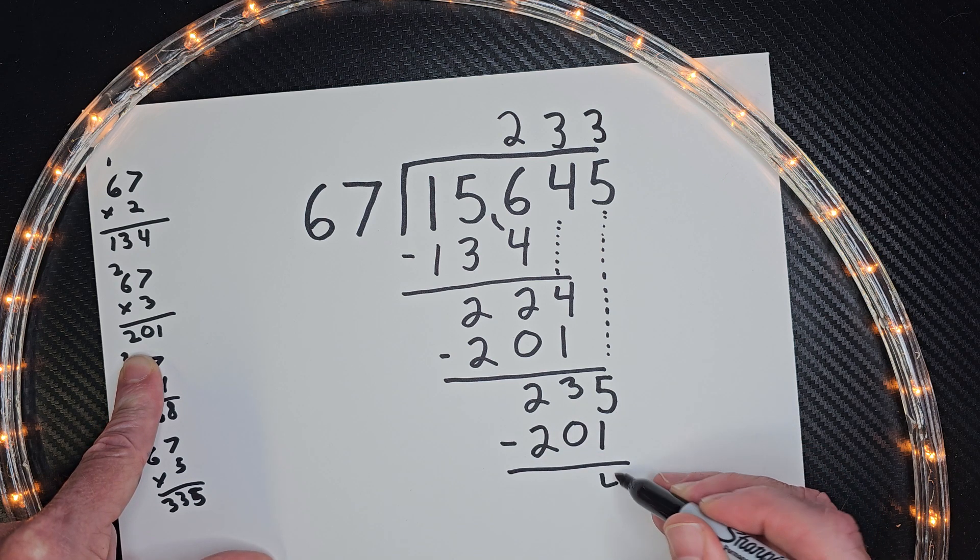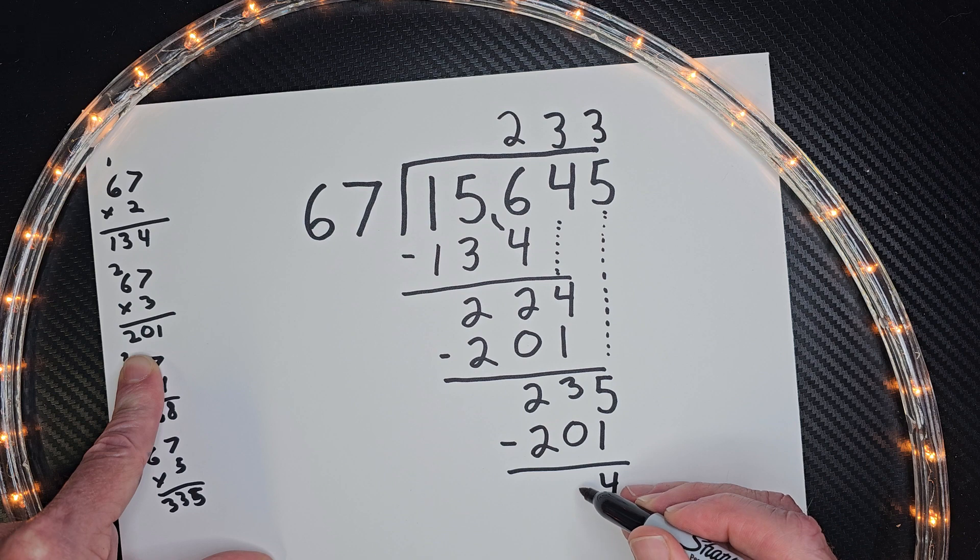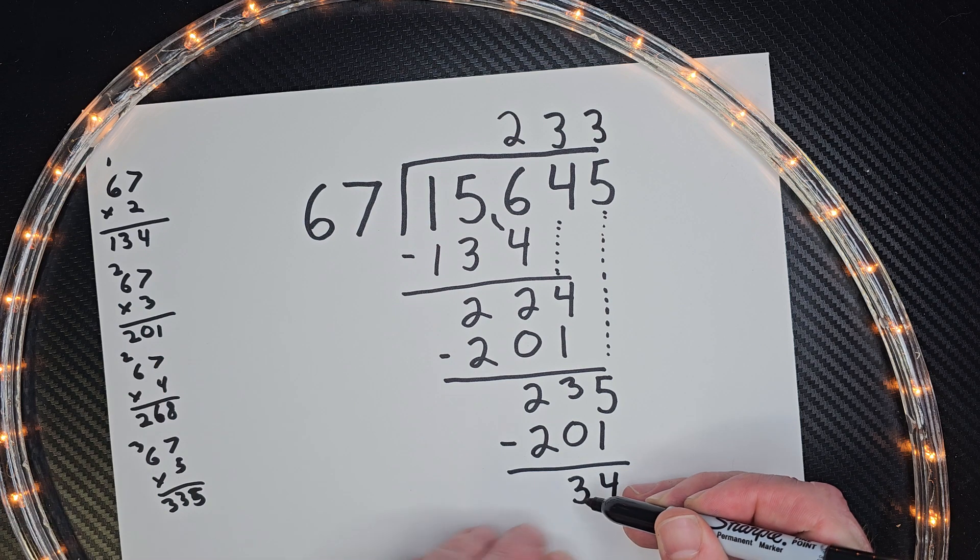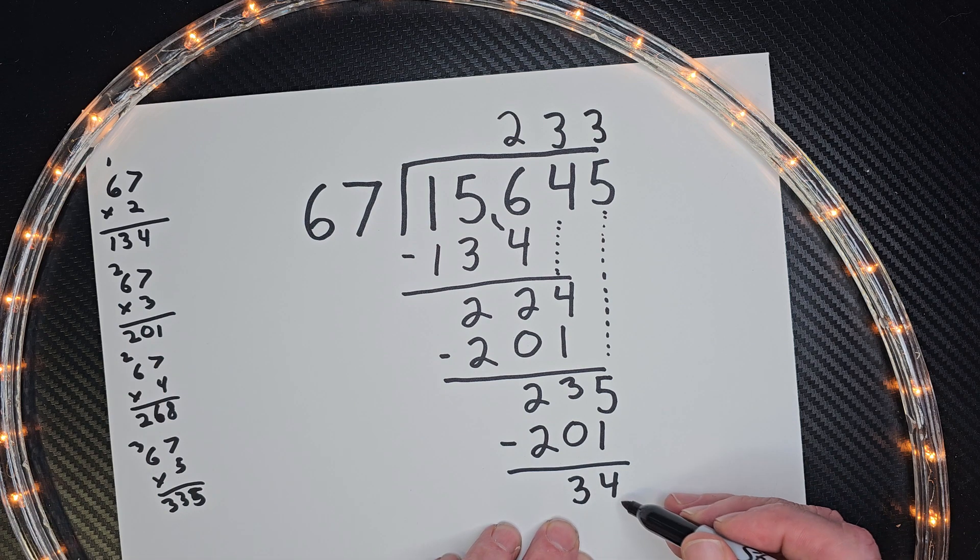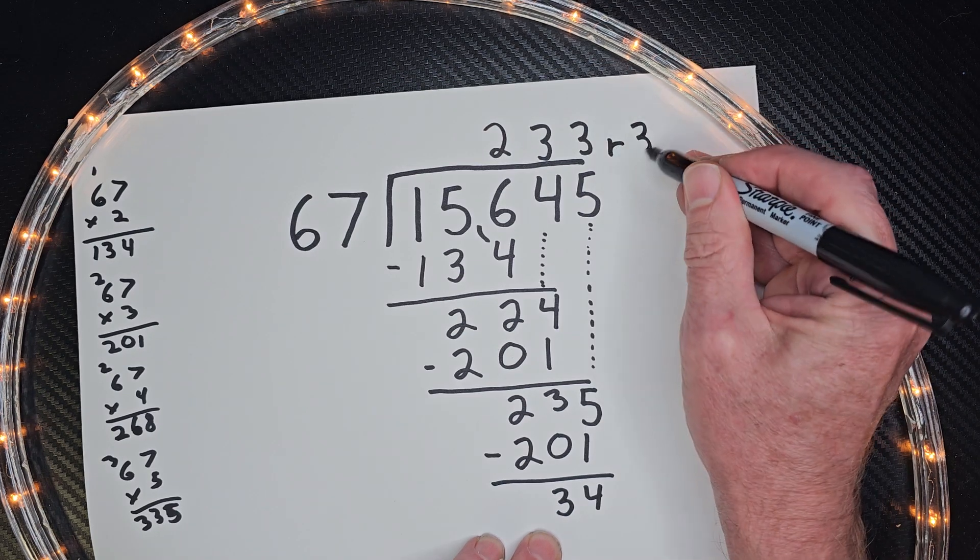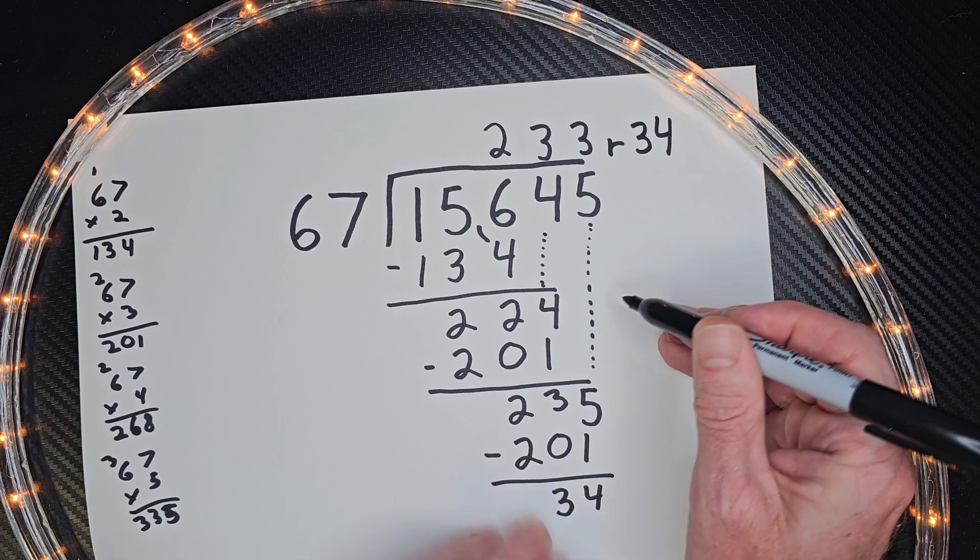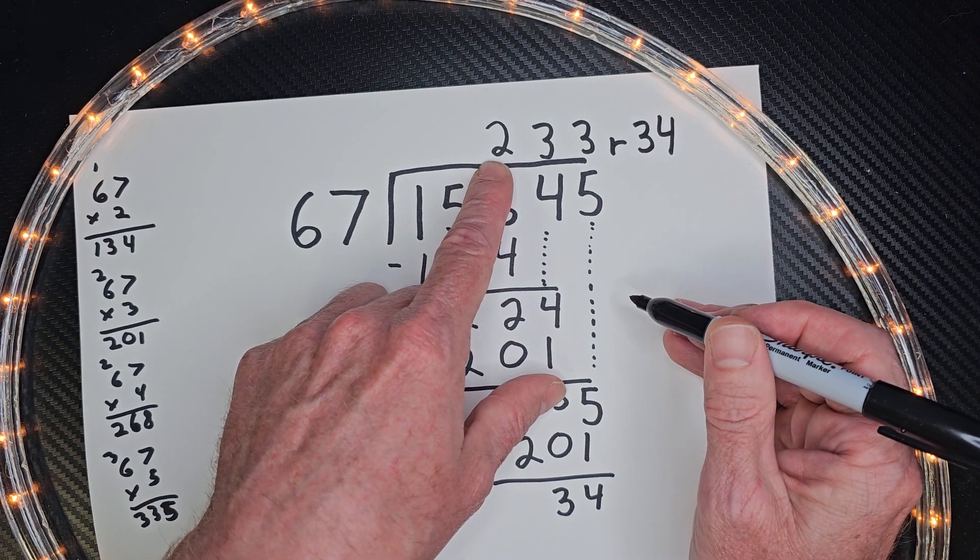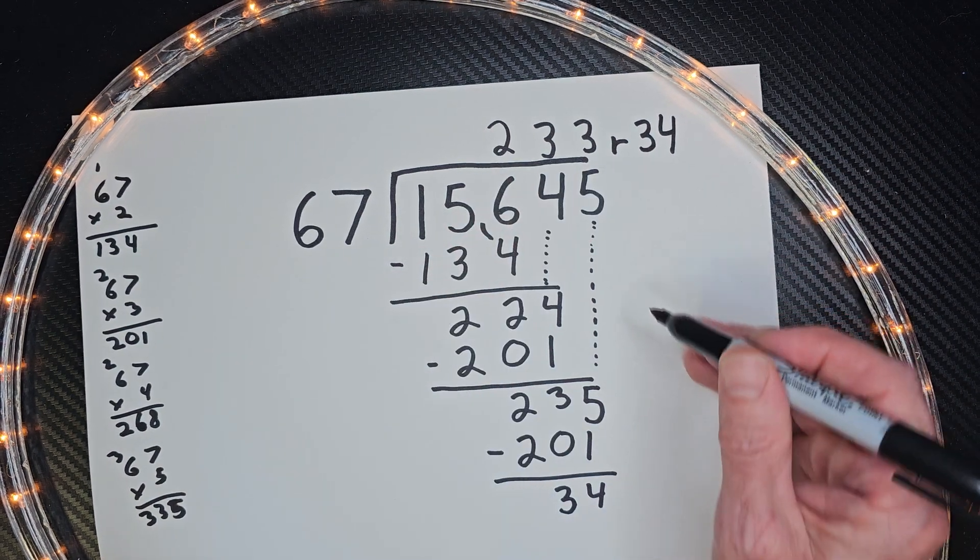5 minus 1 is 4. 3 minus 0 is 3. We can't go any farther. This is our remainder. So we put the remainder right up here. 34. So we have 233 with remainder 34.